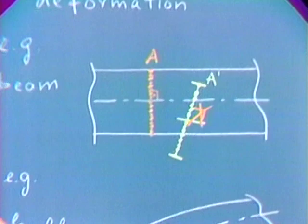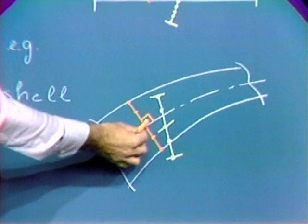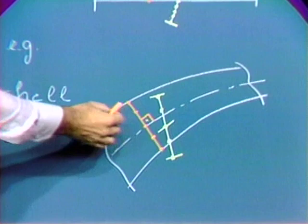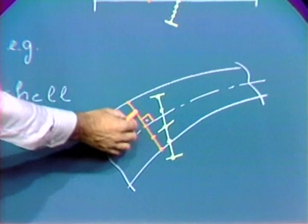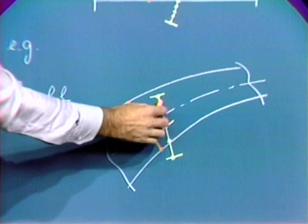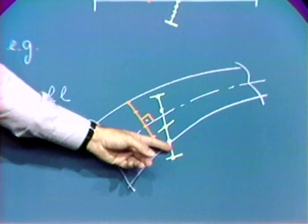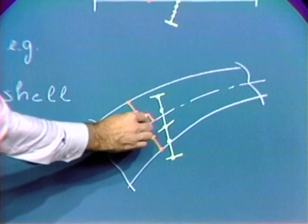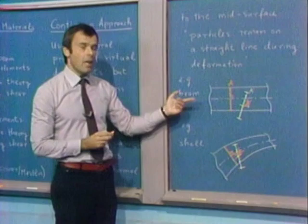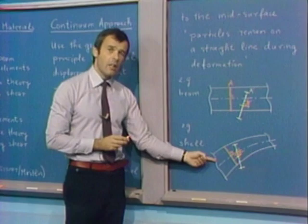In the case of the shell, the kinematic constraint is quite similar. Here we have now the mid-surface of the shell, shown as a dashed line. The particles on a line normal to that mid-surface are shown here again in orange. During deformation, these particles remain on a straight line — now they have come to be the yellow line here. Again, there's a right angle initially, but that right angle is not preserved during deformations, because in each case we are including shear effects.